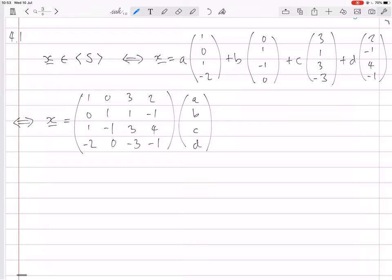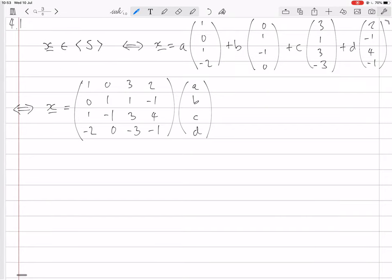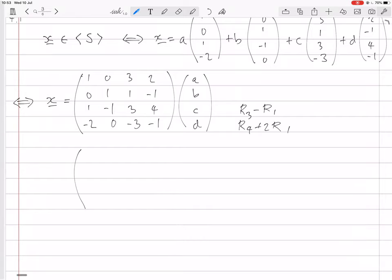So we want to Gauss reduce this to see what solutions it has. So we could start off with doing row 2, making row 3, row 3 minus row 1, and making row 4, row 4 plus 2 times row 1. Of course, now we need to put x, y, z, w there. So we do this. Row 3 minus row 1, so row 1 is the same, row 2 is the same. Row 3 minus row 1, you get z minus x. Row 4 plus 2 times row 1, so w plus 2x.